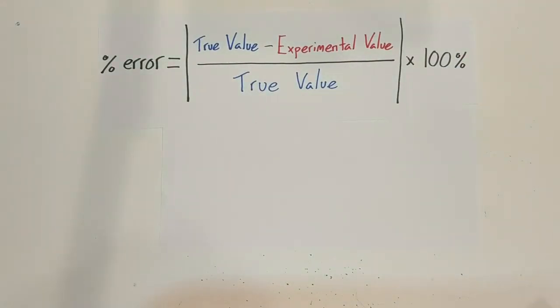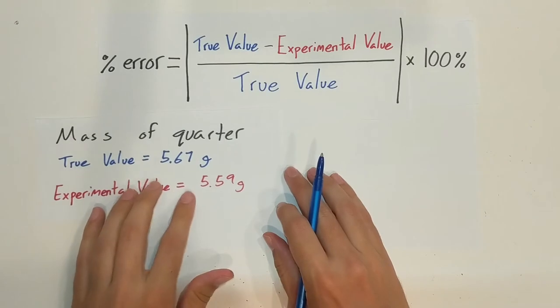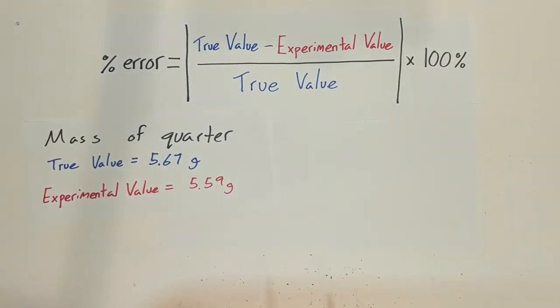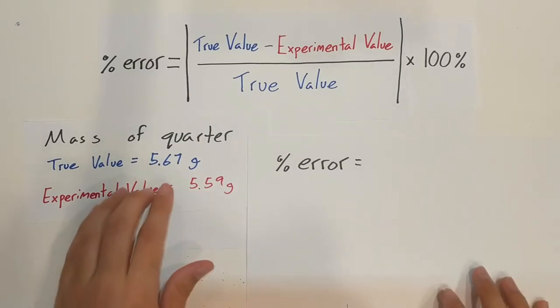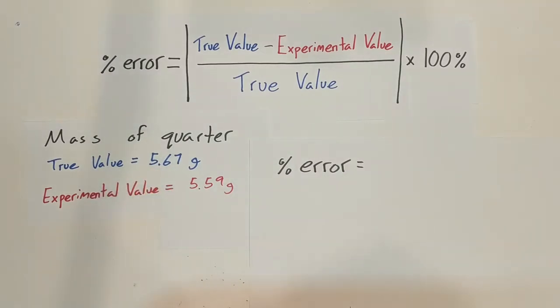In one example, I measured the mass of a quarter, and when I measured it I used the mechanical scale and I got 5.59 grams. And then I looked online to see how much a quarter should actually weigh, what the mass of the actual quarter is, and I found 5.67 grams.